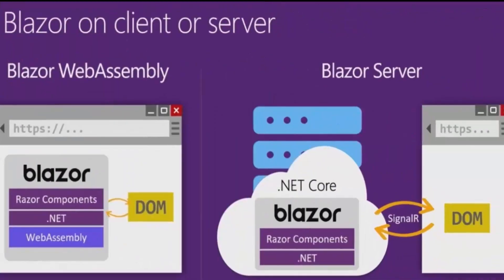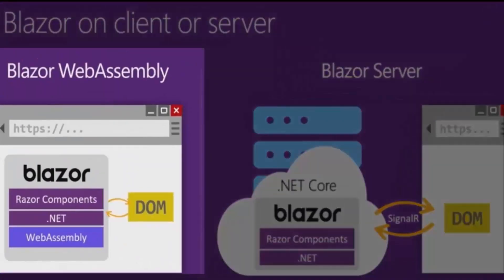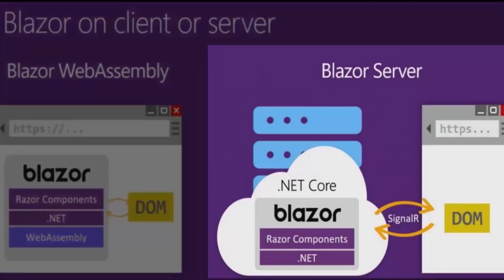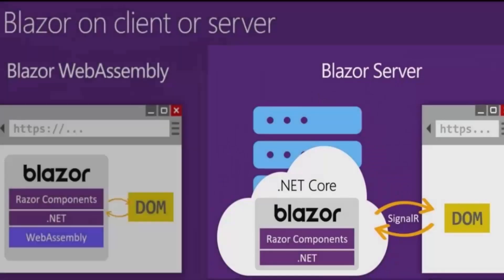Blazor provides two hosting models: first, the Blazor Web Assembly, and second, the Blazor Server. With Blazor, we can use C-Sharp code both in the server side and the client side development instead of JavaScript.